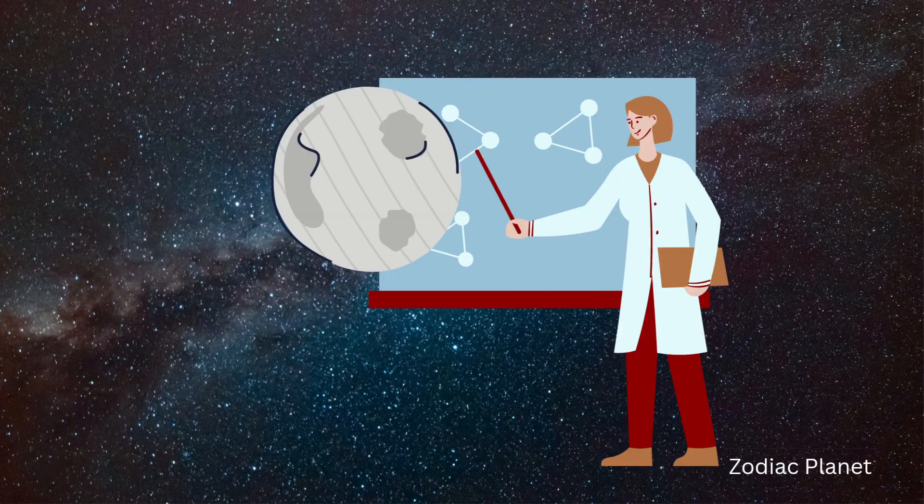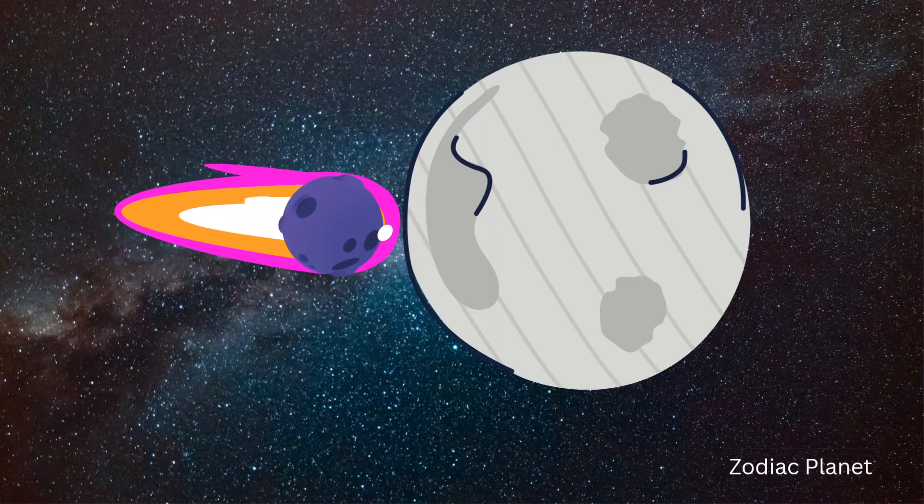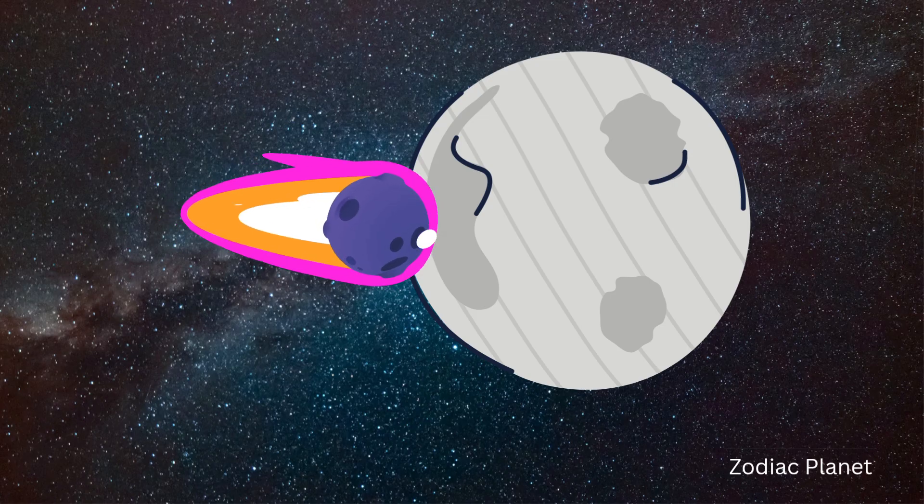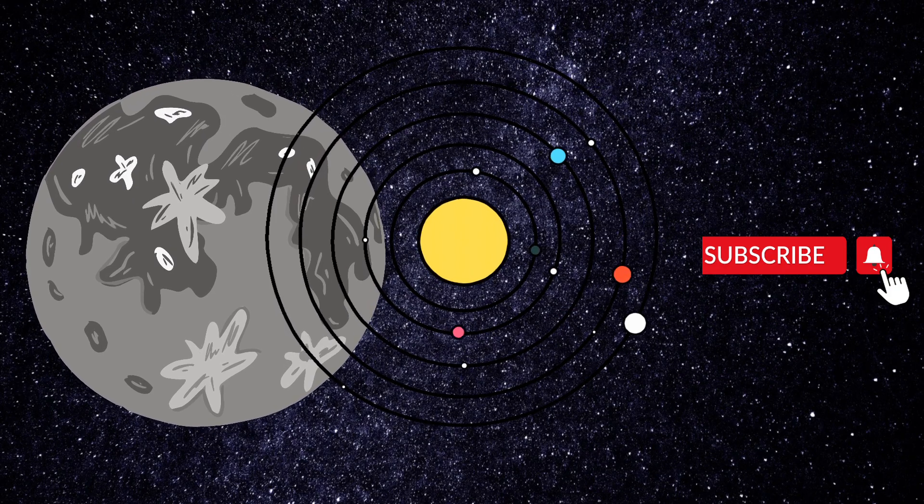Scientists are also studying the large craters that litter the surface, which originated from large impacts from space rocks. These craters could provide insights into the history of the solar system.